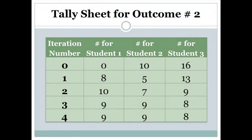In another scenario, eventually the amount each person has remains the same from step to step; however, different group members have different amounts. An example of this is if, in a certain group, one student begins with zero, one begins with ten, and the third begins with sixteen pieces. Here you see the completed tally sheet for such a distribution. Notice that in this example, one student ends up with eight pieces while the other two end up with nine.